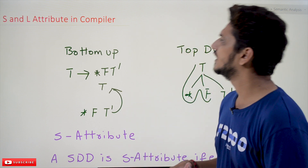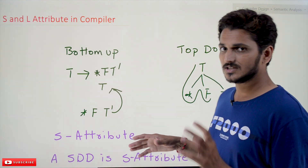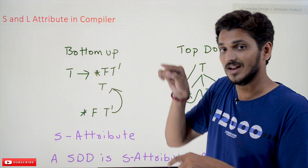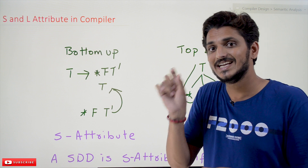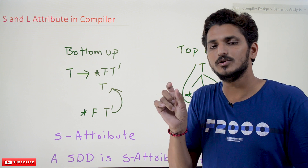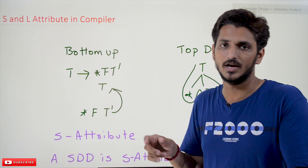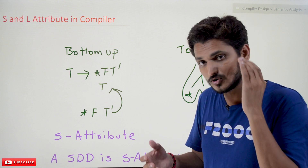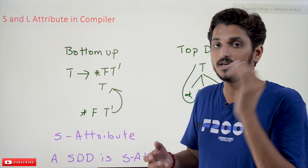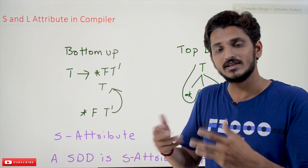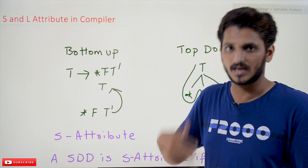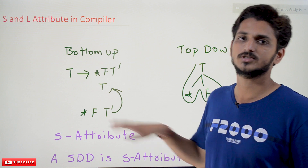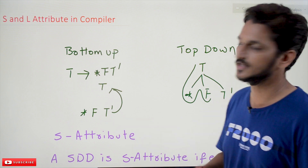Coming to today's class. In our last class, when we discussed about dependency graph, if you are forming a cycle, the SDD attributes cannot be evaluated. In order to write a condition without having a cycle, you should follow some conditions. Let's try to understand those conditions in this class.